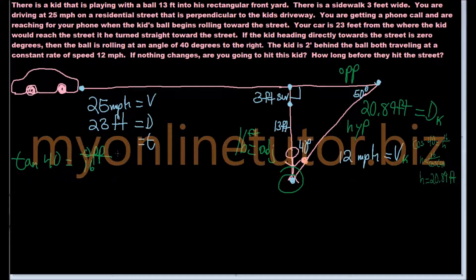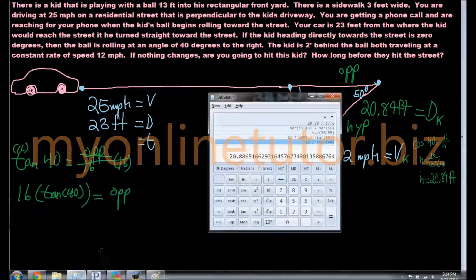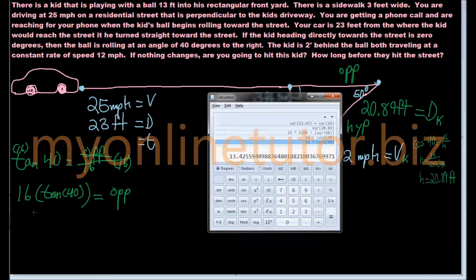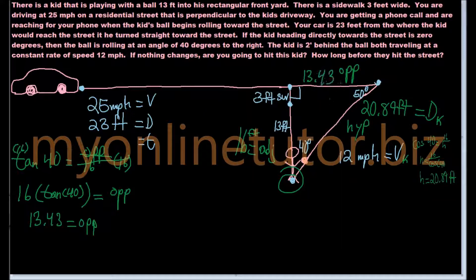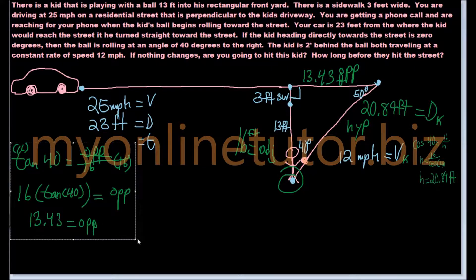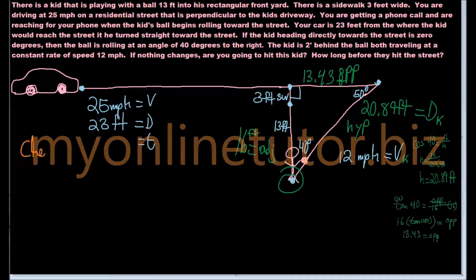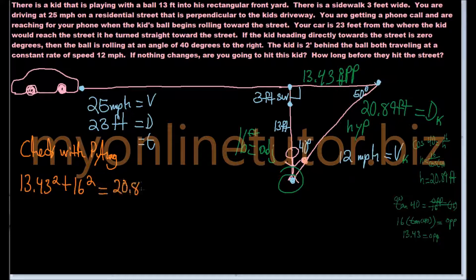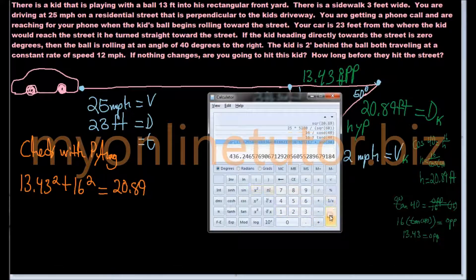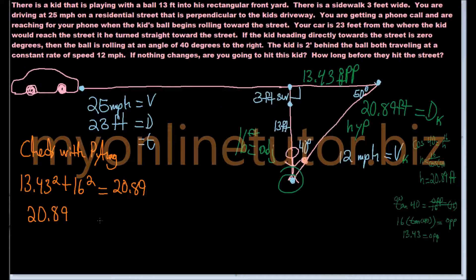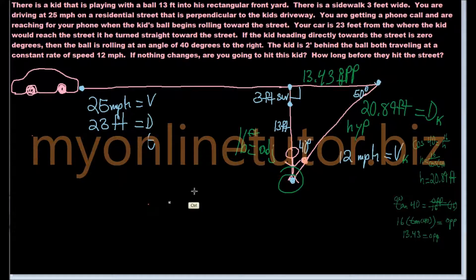Next thing you can do is go to use tangent, and you can find that the tangent of 40 degrees is opposite over 16. You're going to multiply both sides by 16, and you'll end up with 13.43. You want to check your work. Have them check their work. In this case, I just used the Pythagorean theorem to verify that everything is balanced. You take your 13.43 squared, you add that to your 16 squared, and then you take the square root of that number, and you still get 20.89. That's how you know you're correct.